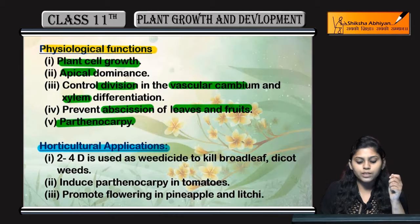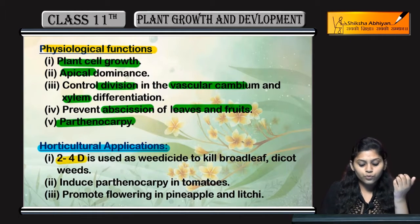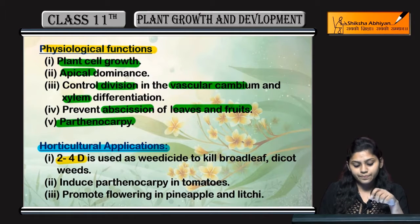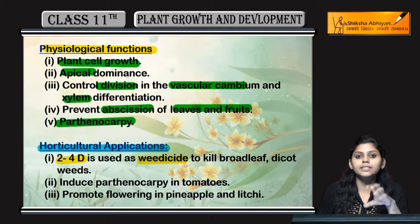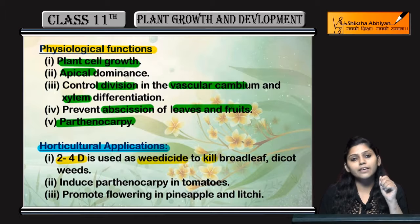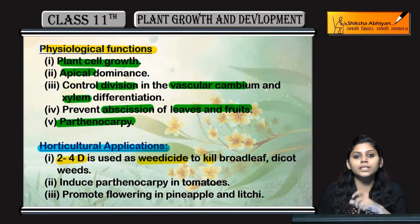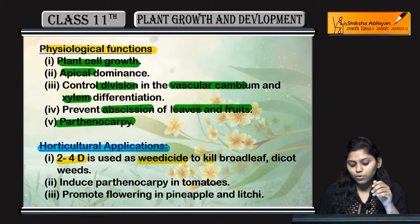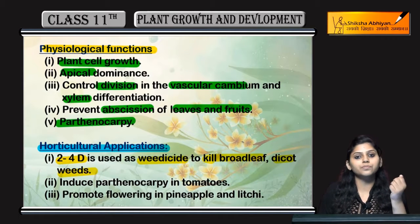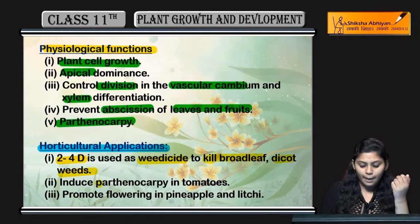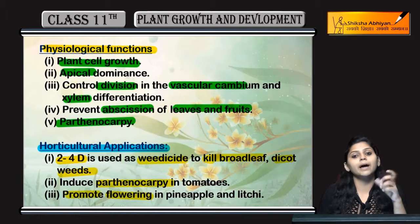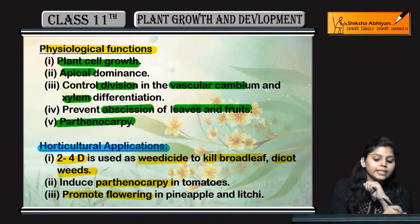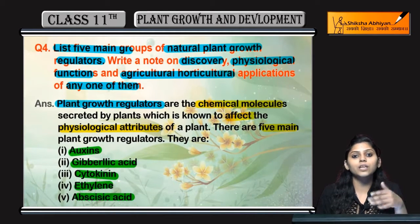Coming to the horticultural applications: 2,4-D, which is an auxin (2,4-dichlorophenoxyacetic acid), is used as a weedicide — it kills weeds. It kills broad-leaved dicot weeds. It also induces parthenocarpy in tomatoes and promotes flowering in pineapple and litchi. So these were the horticultural and agricultural applications of auxins.